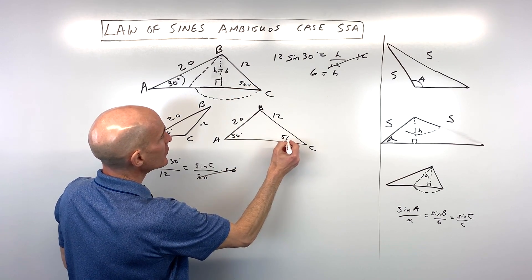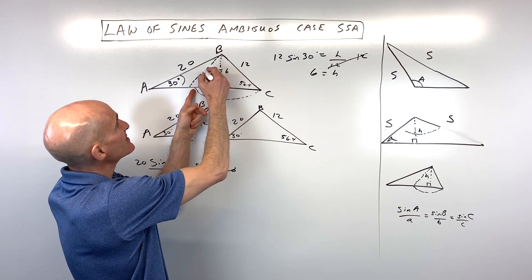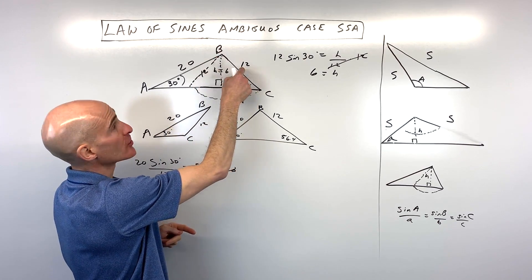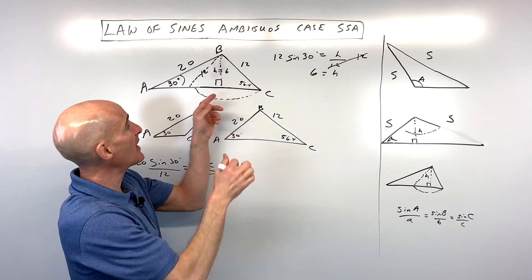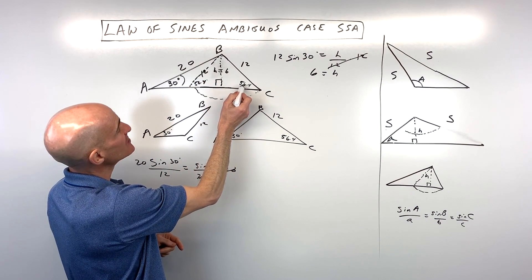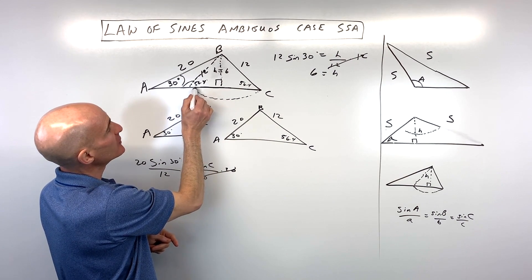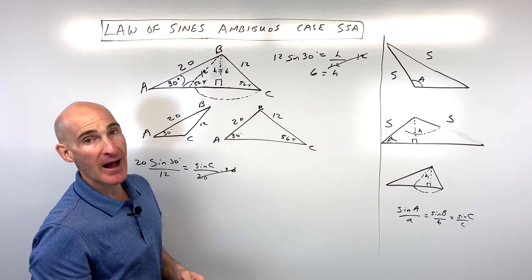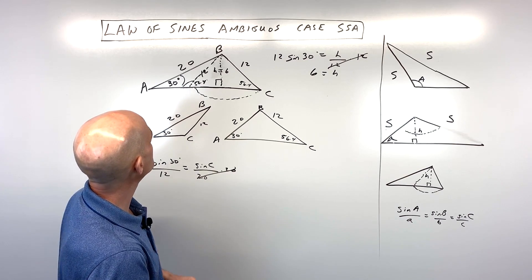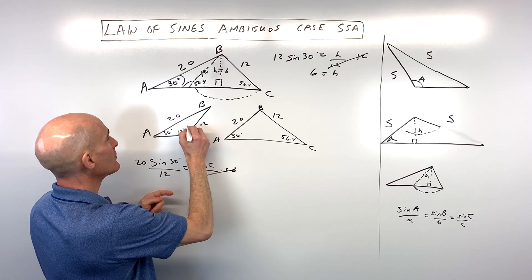Here's where students get confused about the second triangle. When we rotated that side, it means that side is 12 as well. A triangle with two congruent sides is isosceles, and the base angles of an isosceles triangle are congruent. So if this angle is 56.4°, the other base angle is also 56.4°. But the angle next to it forms a linear pair, so that angle in the second triangle is 180° − 56.4° = 123.6°.